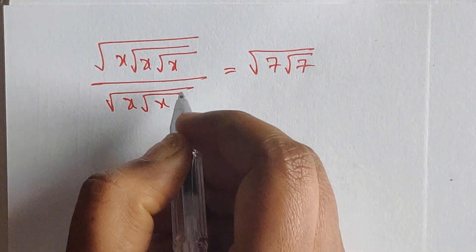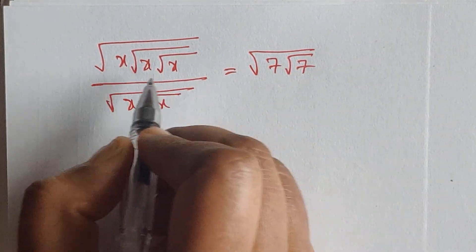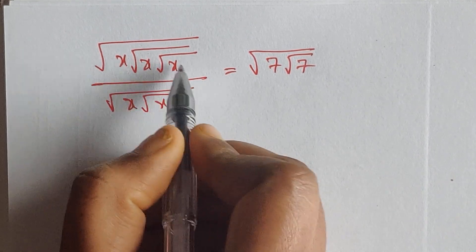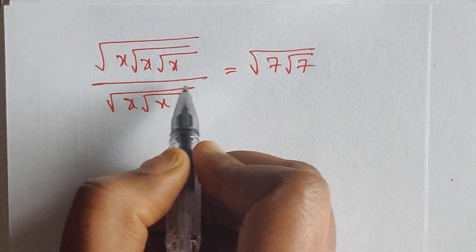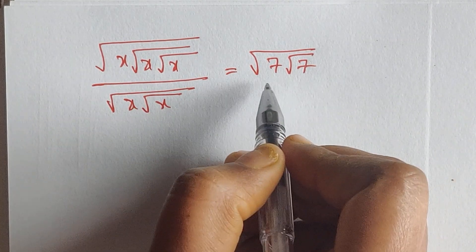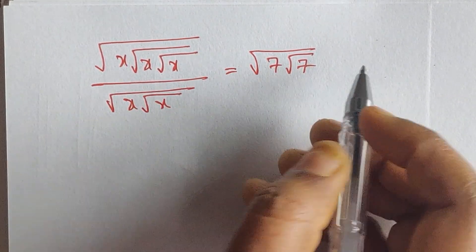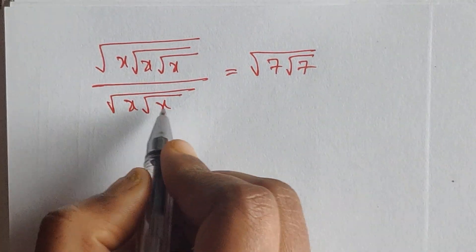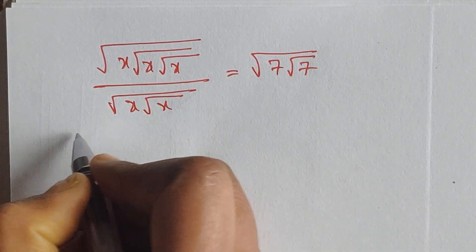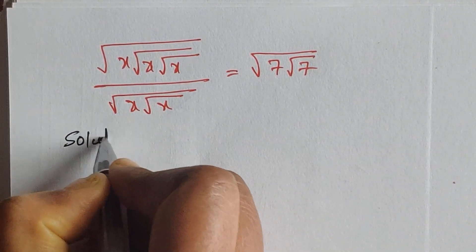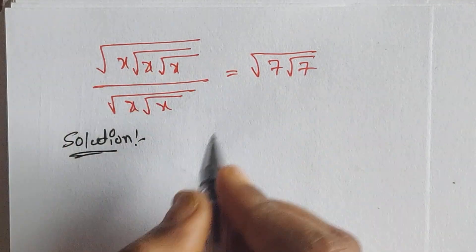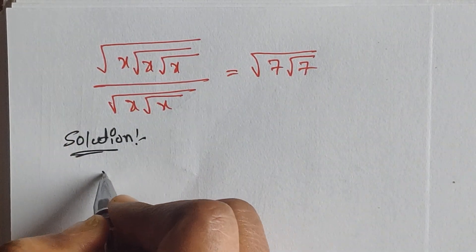Hello everyone, welcome back to our channel. Here we have one problem: square root of x times square root of x times square root of x, divided by square root of x times square root of x, equals square root of 7 times square root of 7. So how do we solve this problem? Let's see.